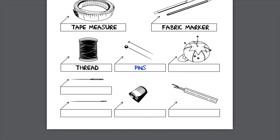Needles have a hole at one end for thread to pass through, called the eye of the needle. Needles are threaded and used for sewing stitches by hand or with a machine. This is a machine sewing needle — it has an eye near the tip and a wider top with one flat side to properly fit into a sewing machine. They come in different types depending on the material you are sewing; this heavy needle is used for sewing leather, while this lighter one is used for sewing thinner fabrics. Label the machine needle on your study guide.